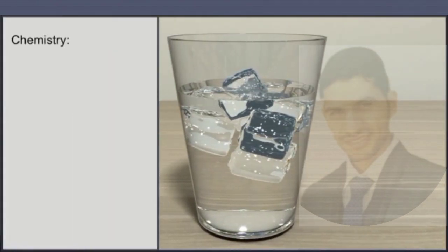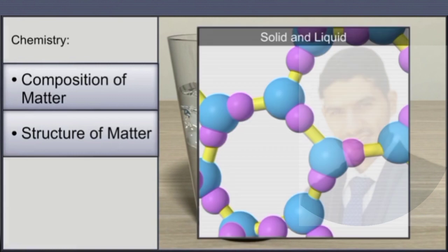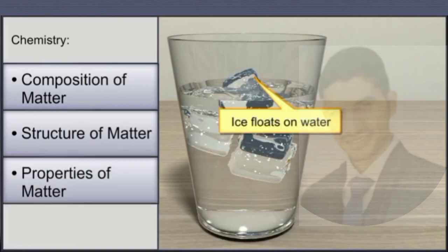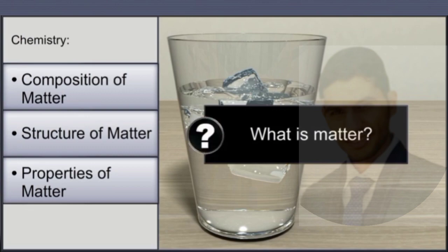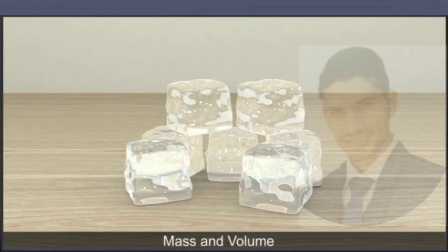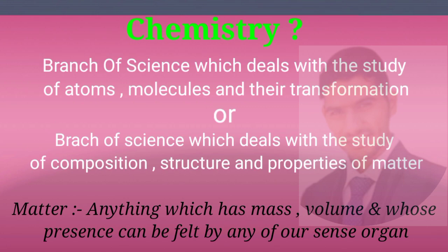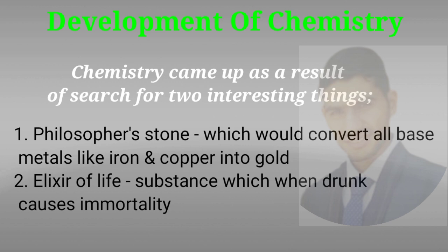What is chemistry? Chemistry simply includes three main things: the composition of matter, the structure of matter, and the properties of matter. Matter is anything which has mass and volume. So to summarize: chemistry is that branch of science which deals with the study of atoms, molecules, and their transformation, or the study of composition, structure, and properties of matter.